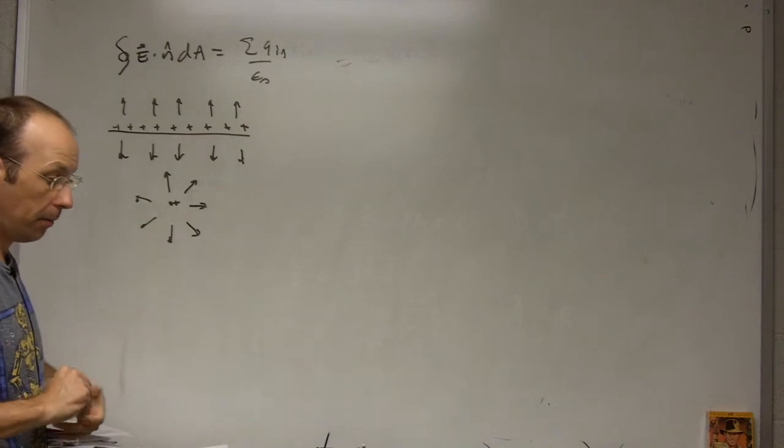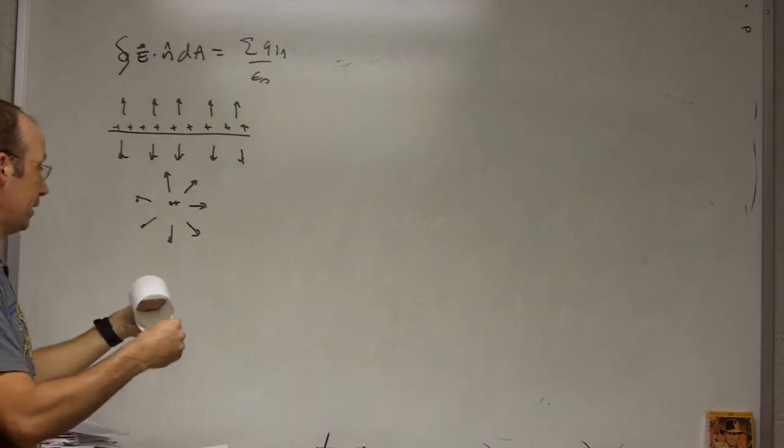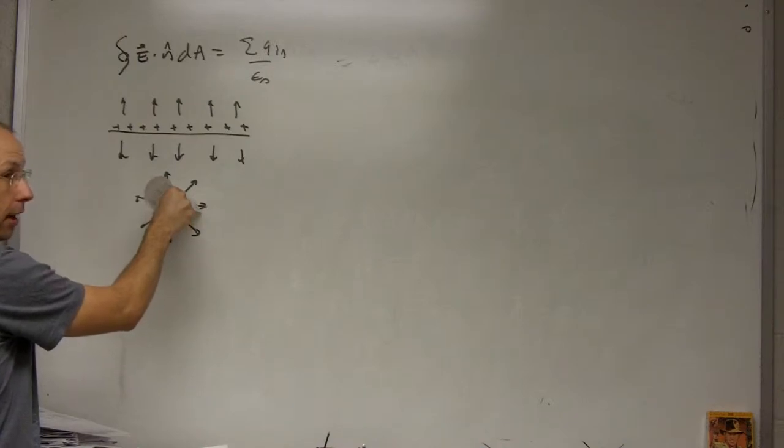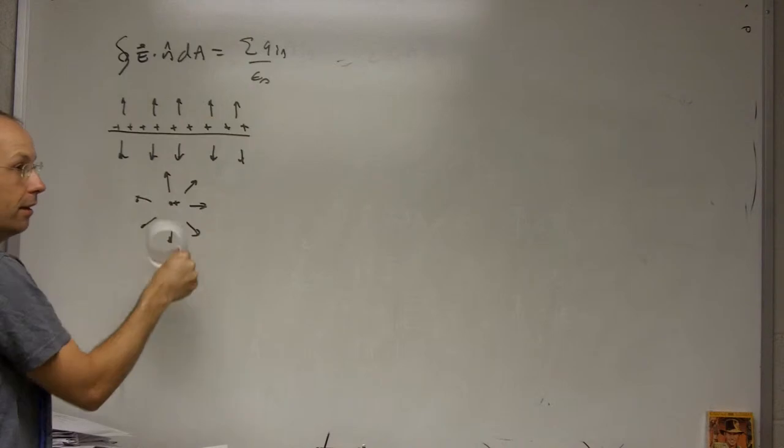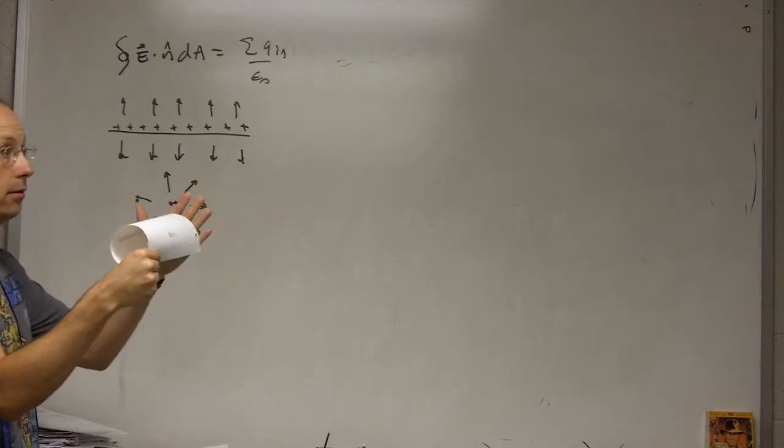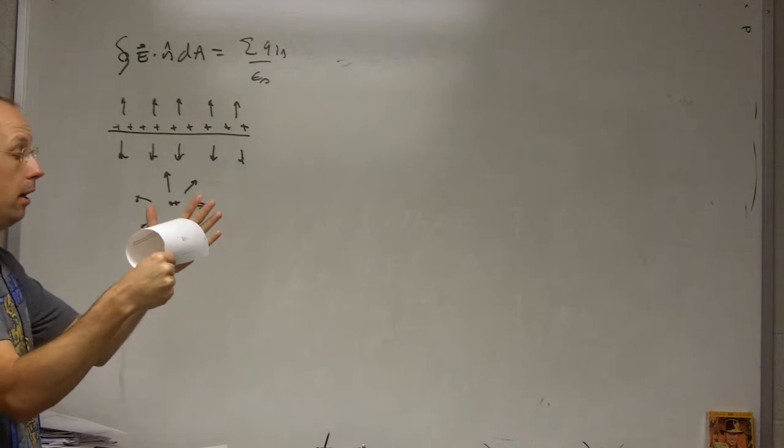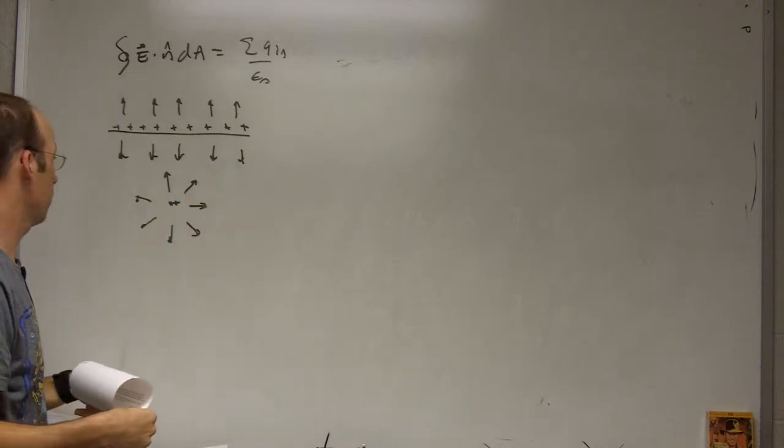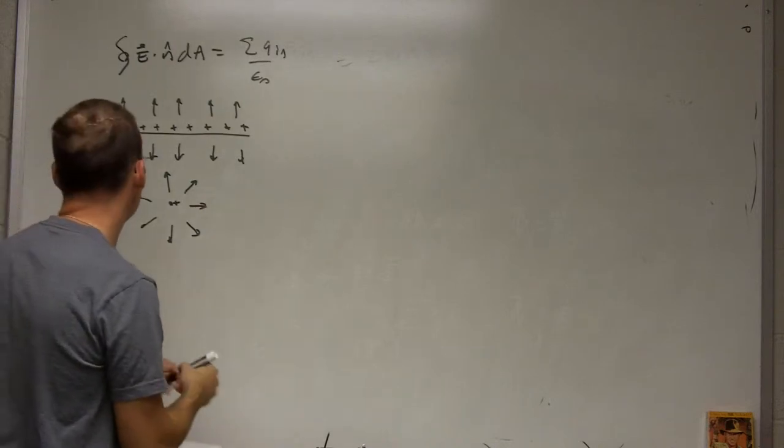But if I pick a cylinder just like the last case like that, you can see that again I'm going to get the electric fields perpendicular to the area. In this case it was parallel to the area vector and in this case the ends are going to have zero flux. I'm going to pick the same shape.